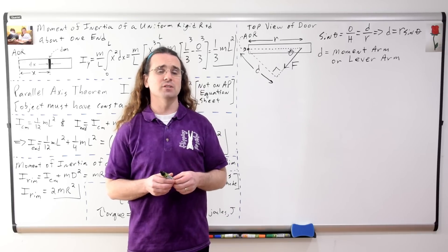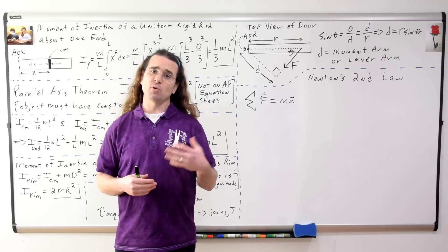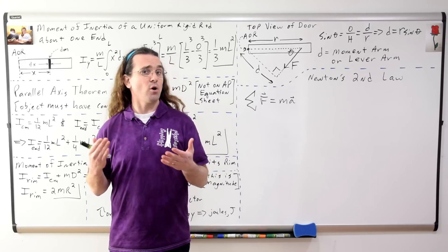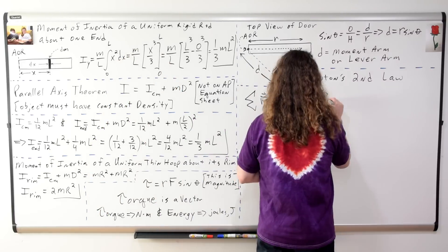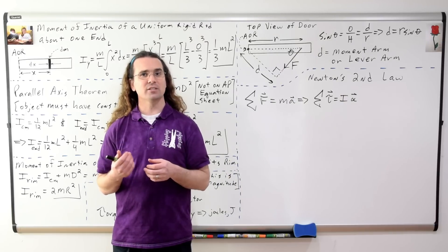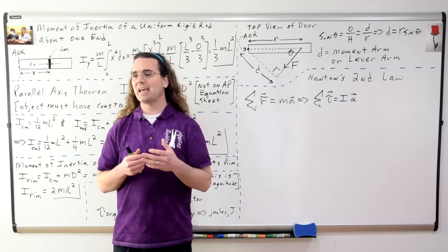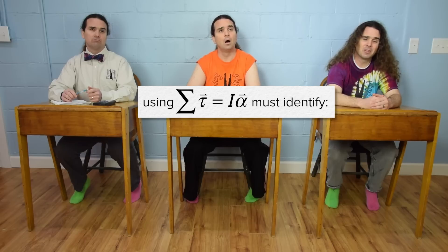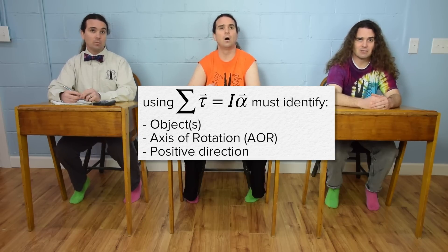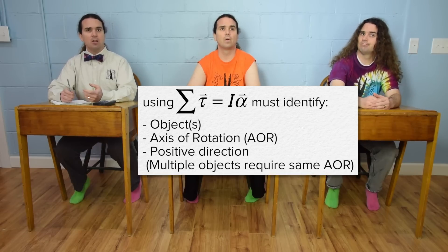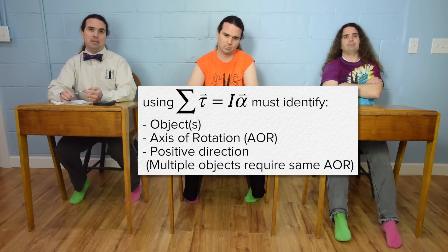Let's talk about the rotational form of Newton's second law. Newton's second law is the net force equals mass times acceleration, where both force and acceleration are vectors. The rotational form simply replaces each variable with its rotational equivalent: net torque equals moment of inertia times angular acceleration, where torque and angular acceleration are vectors. When summing the torques, you always have to identify the object, the axis of rotation, and the positive direction. In order to sum torques on multiple objects, the angular acceleration of each object around the same axis of rotation must be the same.